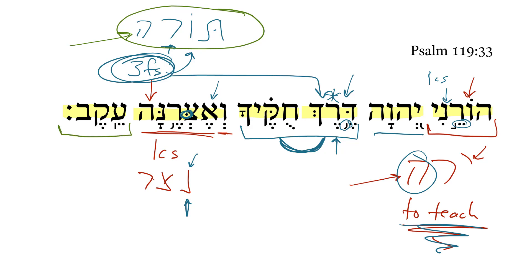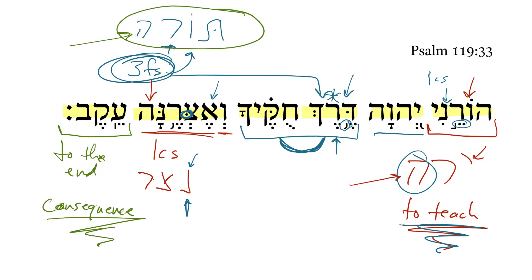Next, we get 'ekev,' which is something like 'to the end' — that's how most translations work with it. But the word has to do with consequence. Sometimes it's translated as 'because of.' So what you have here essentially is 'and I will keep it to the consequential end,' or to the consequential outcome. In other words, what is the result of keeping the Torah? That's how far, or that's the extent to which I will keep it.